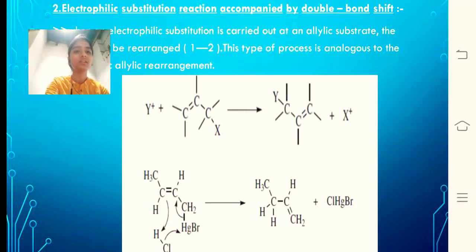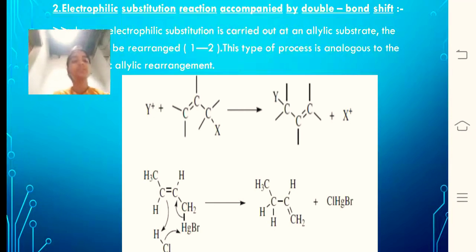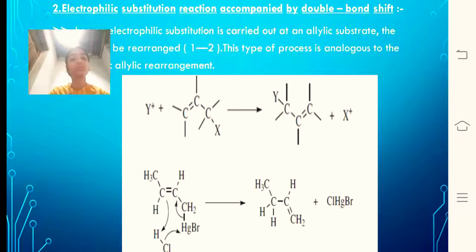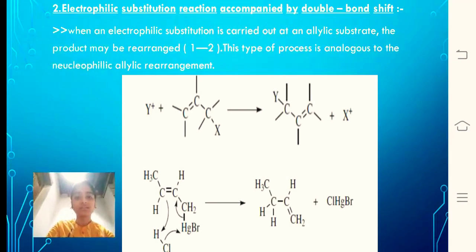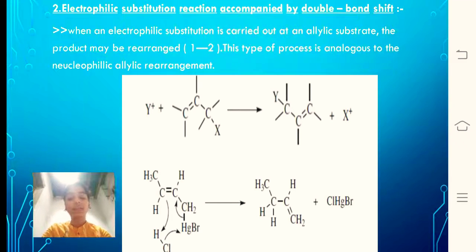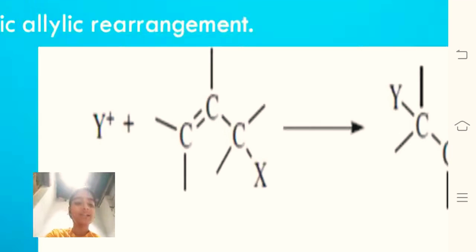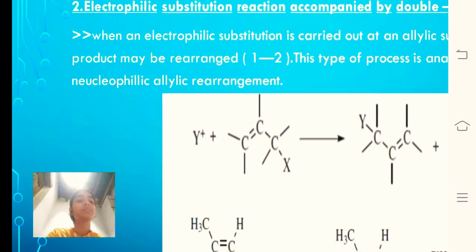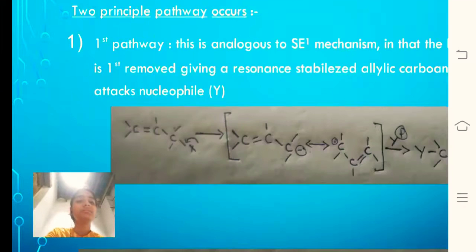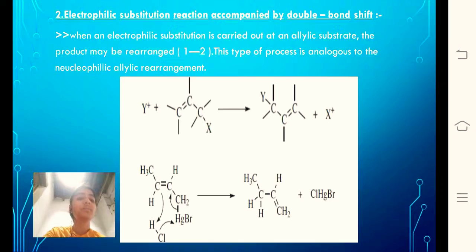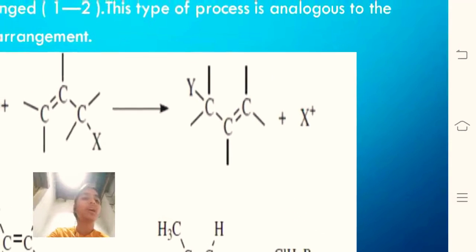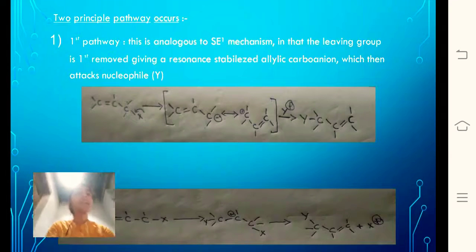Electrophilic reactions are possible in both nucleophilic and electrophilic substitutions. In an electrophilic substitution on an allylic substrate, attack of an electrophile and displacement of the double bond occurs, leading to the product. As you can see in the visual here, Y acts as the electrophile and X is at the allylic position. When the reaction gives a product, X is replaced from its own position to another placement.